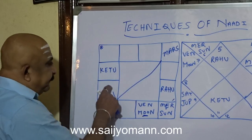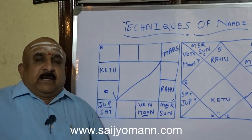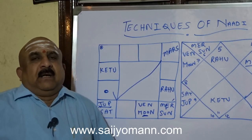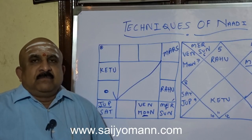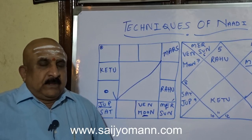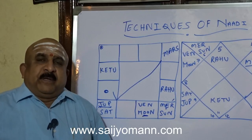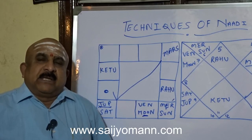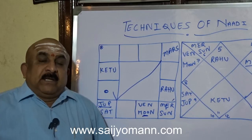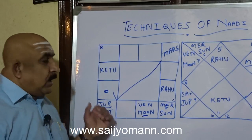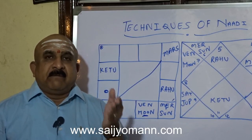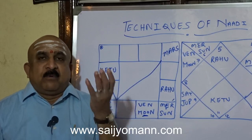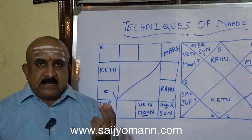Now we shall go to the second house. Usually from Lagna, the second house is called Dhanastanam, Vakustanam, Kutumbastanam. Here also, from Jupiter, the second house is called Kutumbastanam, Dhanastanam, Vakustanam. So how do you know that the native will have a good financial position, or to know about the Kutumbastanam, Dhanastanam, and Vakustanam?